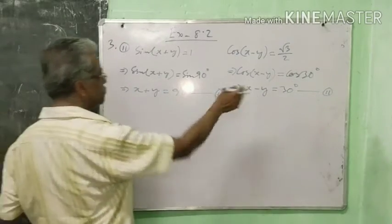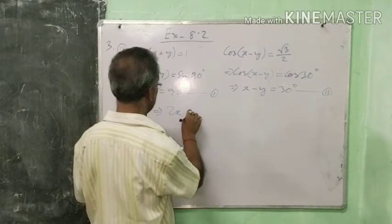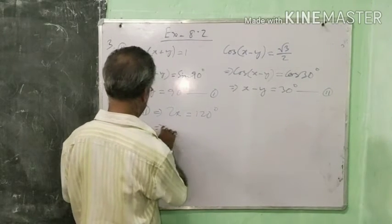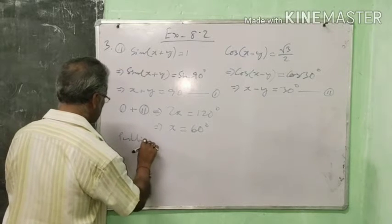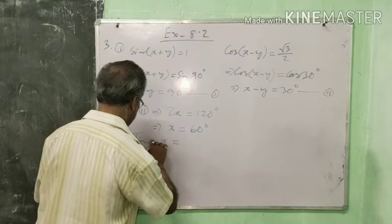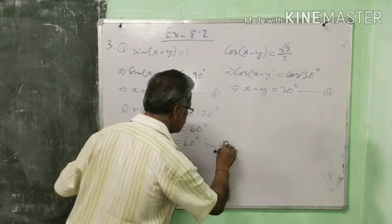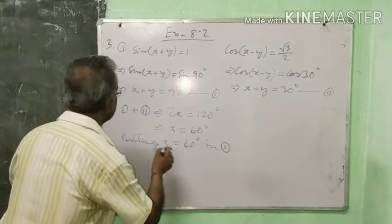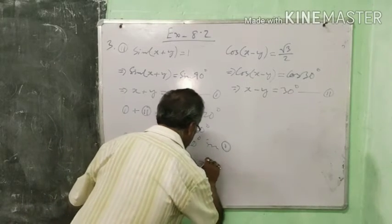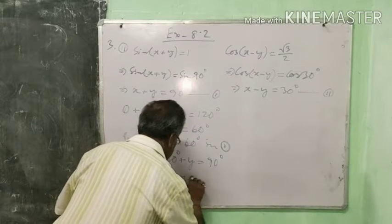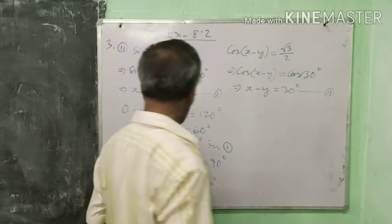Again these are linear simultaneous equations. Adding both equations: 2x equals 90 plus 30 equals 120, so x equals 60 degrees. Substituting x equals 60 degrees into equation number 1: 60 plus y equals 90 degrees, hence y equals 90 minus 60 equals 30 degrees. Thus x equals 60 degrees and y equals 30 degrees.